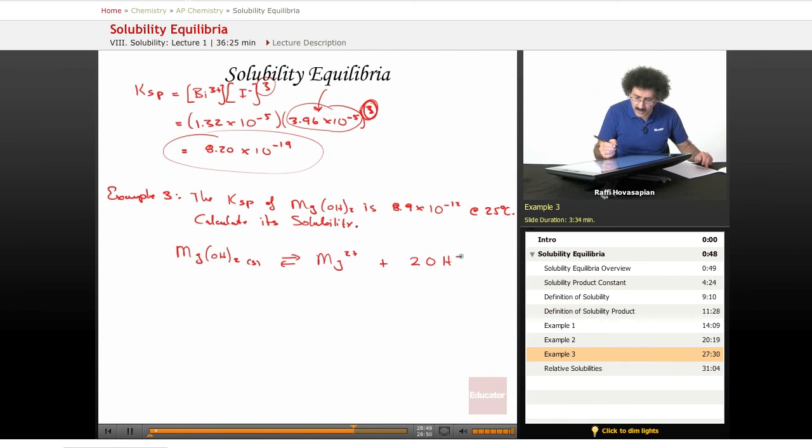It's an equilibrium when it dissociates with one magnesium ion plus two hydroxide ions. We have the Ksp, we want the solubility.